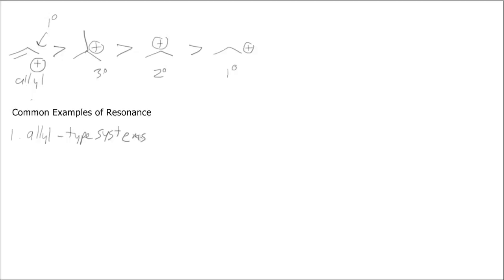Let's look at some common examples of resonance. So we'll start with allyl type systems, sort of like what we had just left off on. And there are a couple of different examples that we'll see commonly.